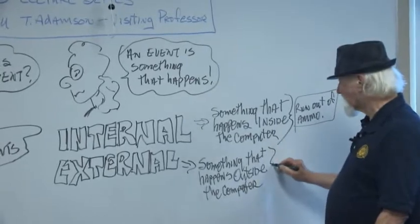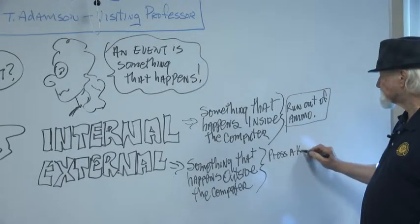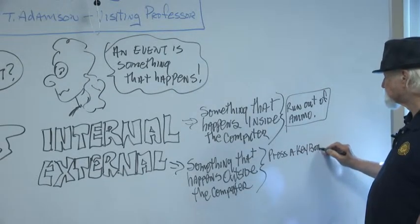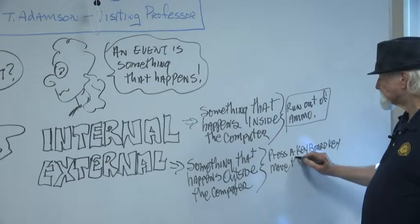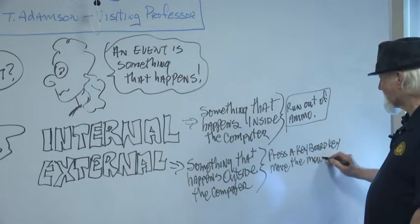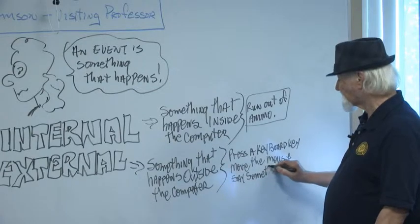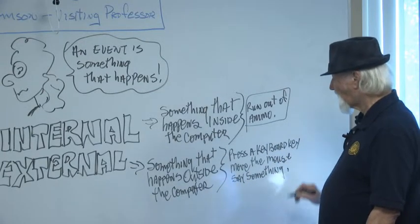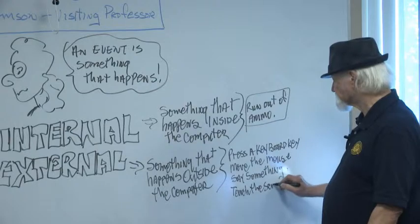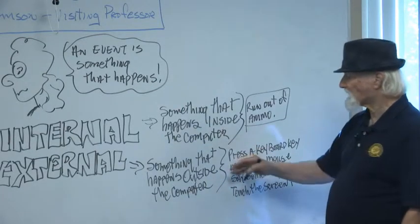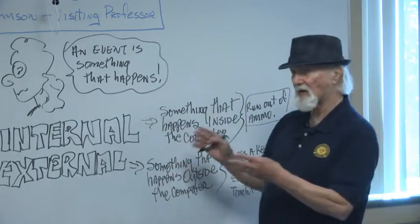An external event could be you press the key on the keyboard, or you might move the mouse, or you might say something into the microphone, or you might touch the screen. All of these are events that take place. So you can have these two kinds of events: internal events and external events.